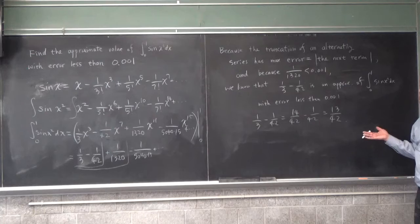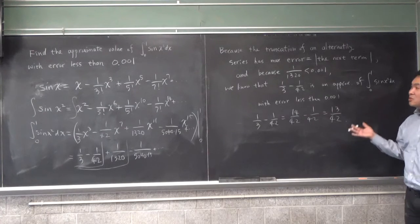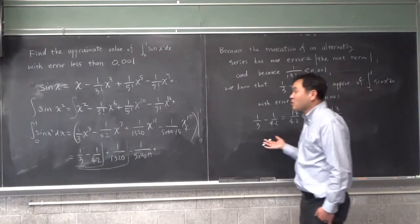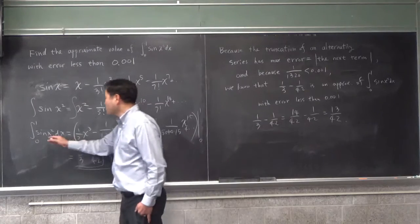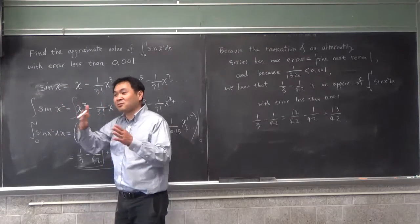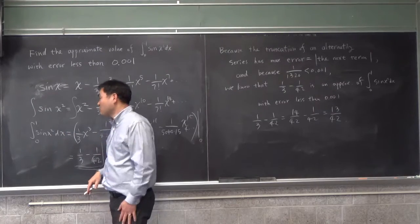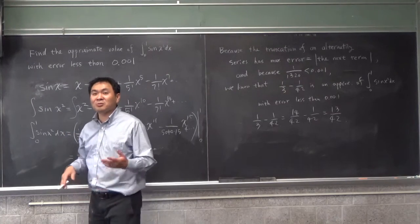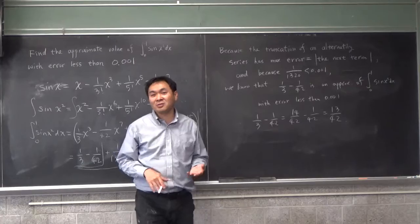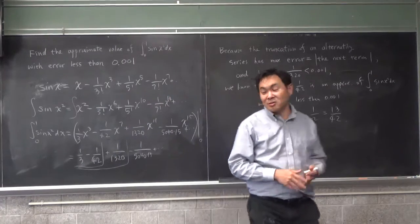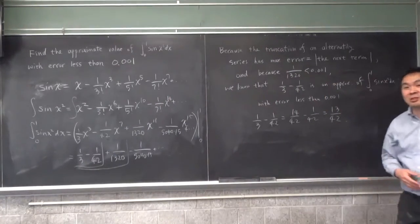So 13 over 42 is the approximate value of this integral. And that's actually pretty impressive if you think about the alternative ways to get this value, because if you were to use the Riemann sum, you'll pretty much have to divide this into like 10 different points and evaluate all that, and I don't even know the error for that. So this method will be a lot better than doing it that way.